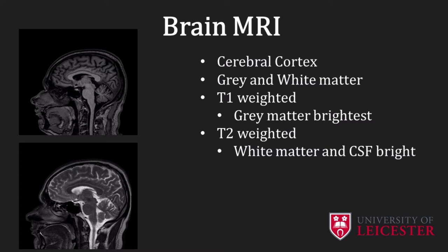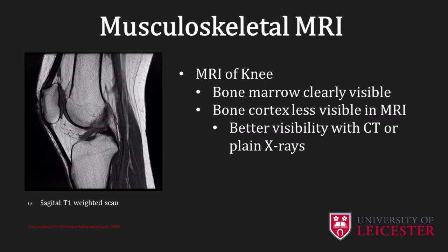In T1 weighted images of the brain, grey matter appears the brightest. On the other hand, cerebral spinal fluid, CSF, which is composed mainly of water, appears dark. In T2 weighted images of the brain, white matter and CSF appear brightest, because water produces high signal intensities in T2 weighted images. In this sagittal T1 weighted image of the knee, the tissue with the bone marrow appears bright because it contains fat molecules that produce high MR signals in T1 weighted images. On the other hand, the bone cortex does not contain fat, so that appears dark. To obtain better visibility of the bone cortex, CT or plain x-rays can be used.